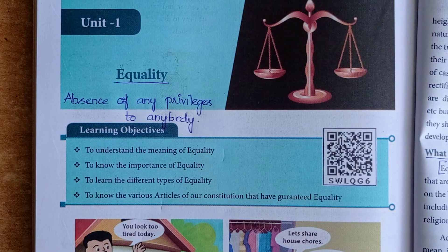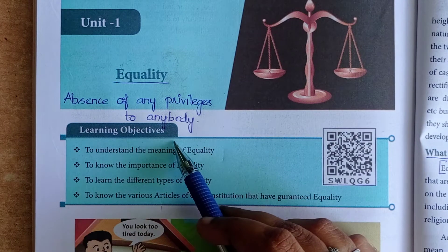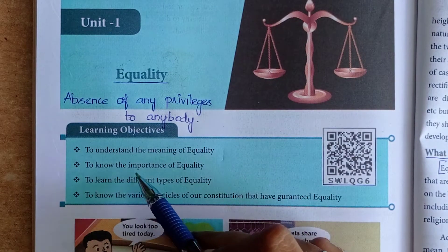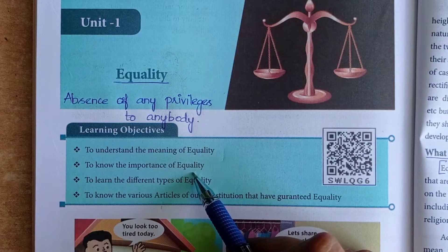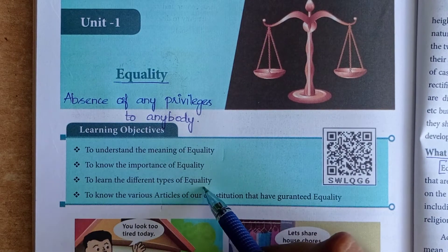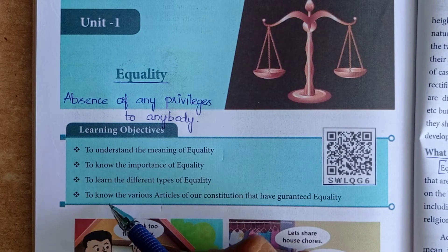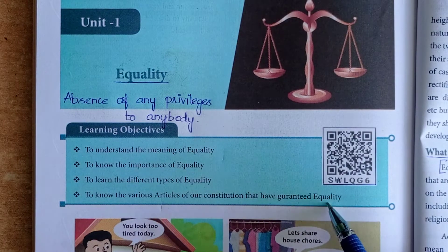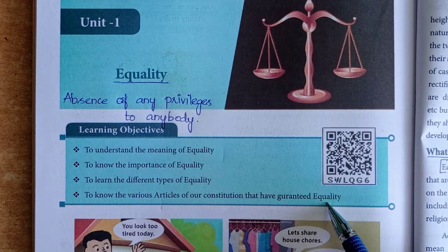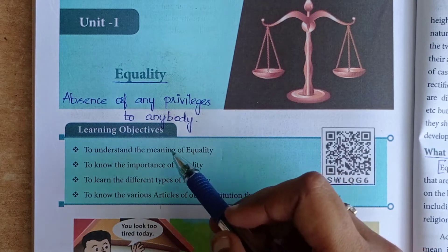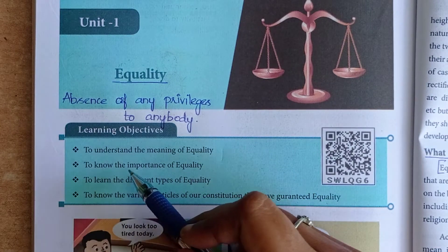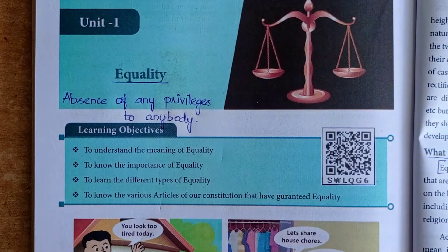Today the learning objectives are: to understand the meaning of equality, to know the importance of equality, to learn the different types of equality, and to know the various articles of our constitution that have guaranteed equality. Today we are going to cover the first two objectives — understanding the meaning and importance of equality.